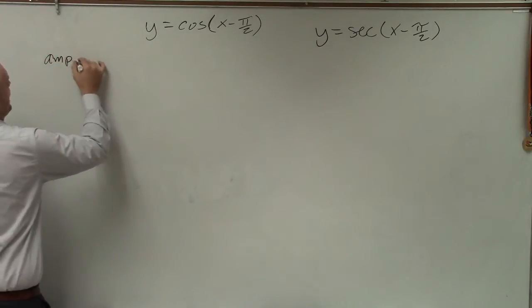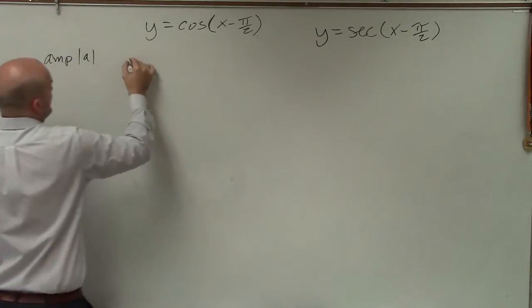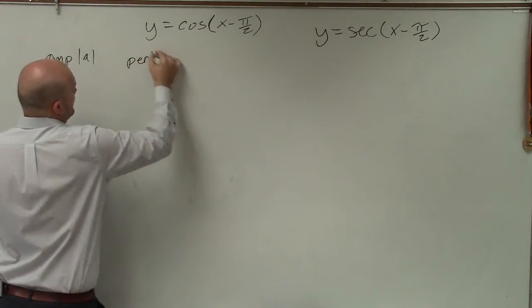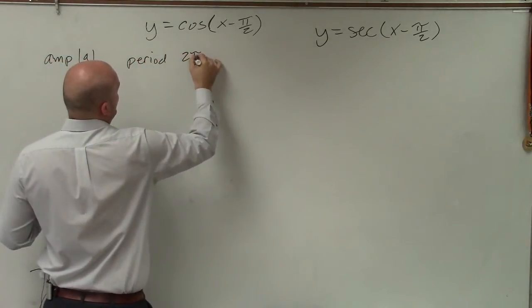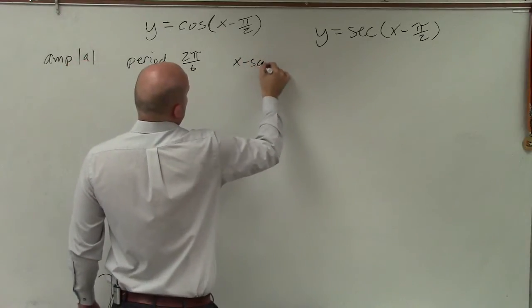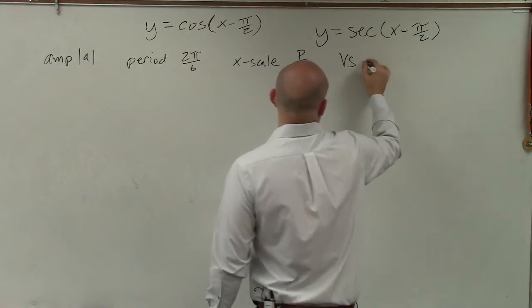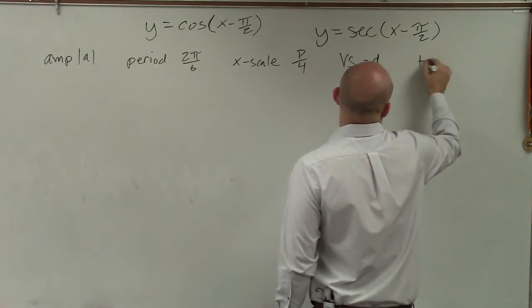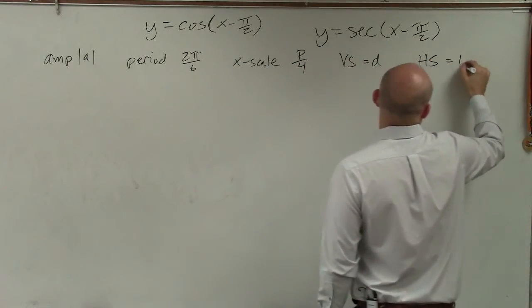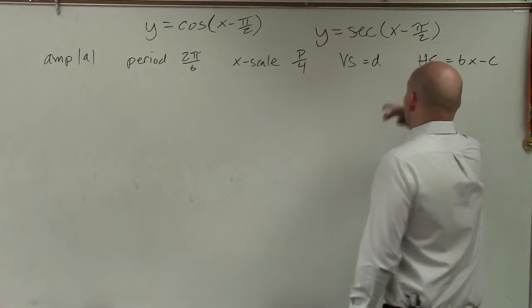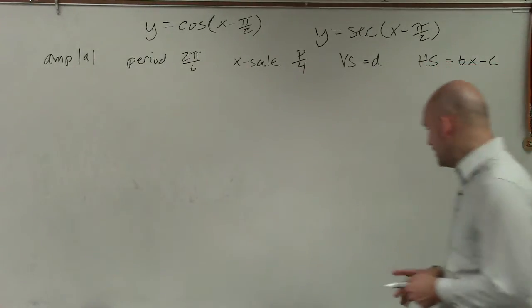First thing we want to do is determine the amplitude, which is the absolute value of a. Next thing we want to do is determine the period, which is 2 pi divided by b. The next thing we want to do is determine the x scale, which is period divided by 4. Vertical shift, which is equal to d. And horizontal shift, which is equal to bx minus c. And you might say, where did all this information come from?